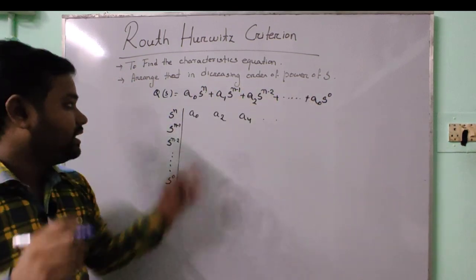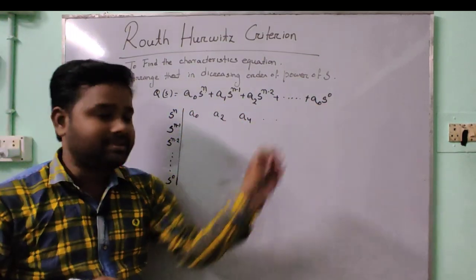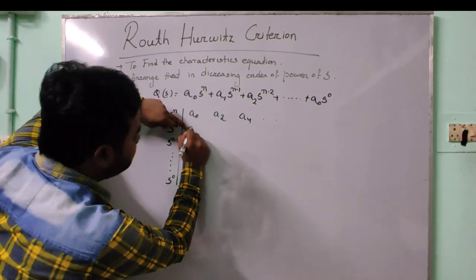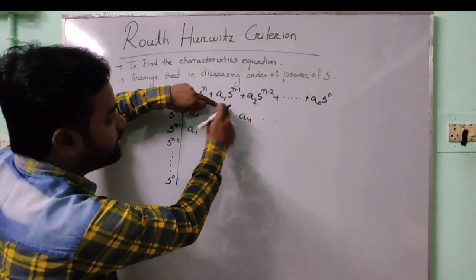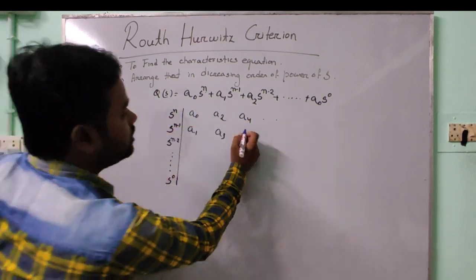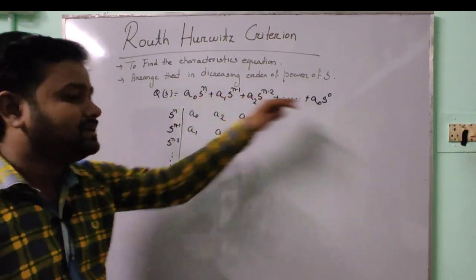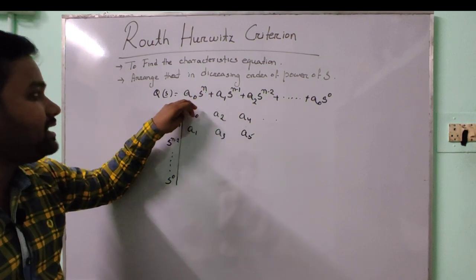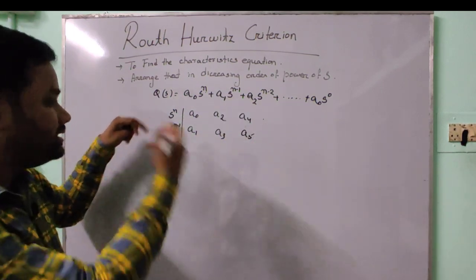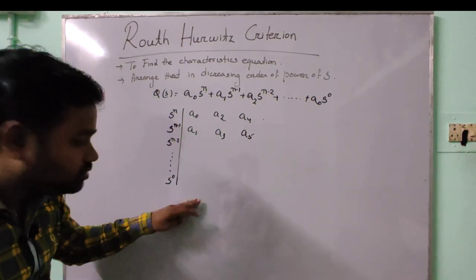For the second row, we write the coefficients that were skipped in the first row. Since a₀ was written and a₁ was skipped, we write a₁ in the second row. After a₁, since a₂ was written in the first row, we write a₃ here, then a₅, and so on. The first two rows are filled from the characteristic equation by alternating coefficients between the two rows.